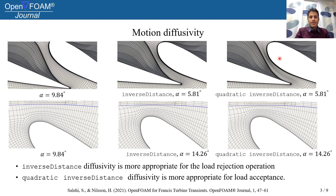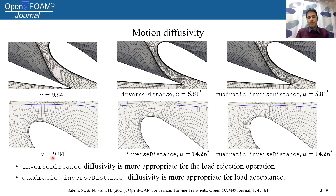For load acceptance, cells that are close to the interface deform most — so cells close to this blue curve here and here. For these reasons, inverse distance diffusivity is more appropriate for the load rejection operation, whereas a quadratic manipulator can actually enhance or improve the mesh deformation for the load acceptance operation.